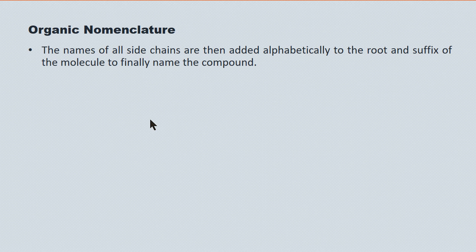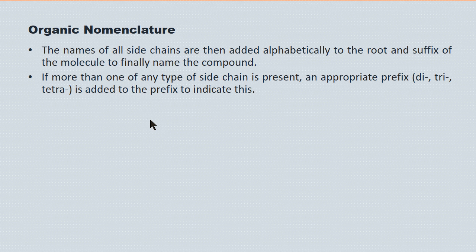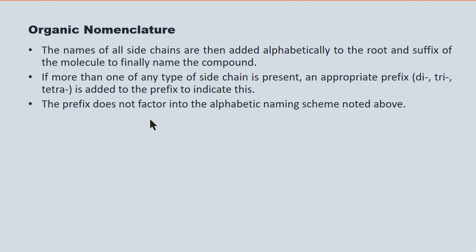The name of all side chains are added alphabetically to the root and to the suffix to make the final compound name. If there's more than one side attachment — say there's more than one methyl or more than one ethyl group — then we would employ a prefix to a prefix. It might be dimethyl, it might be triethyl, depending on the number of equivalent side chains. This prefix-to-prefix does not factor into the alphabetic naming scheme. Cyclic compounds also have their own prefix — we refer to them as cyclo compounds.